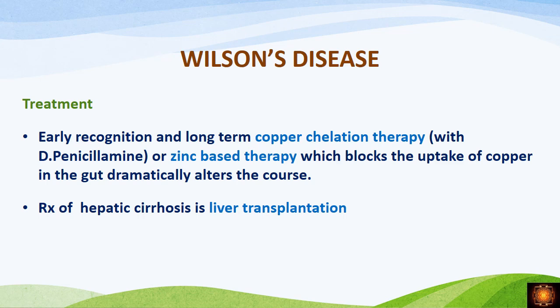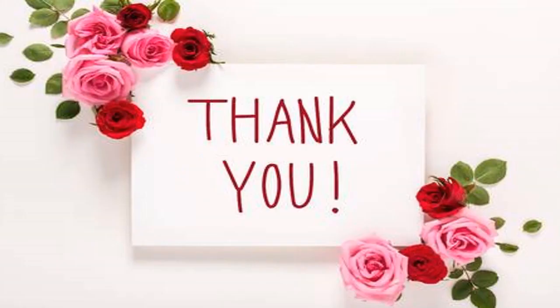Treatment is chelation therapy — similar to iron chelation in hemochromatosis, here we give copper chelation therapy, typically with penicillamine. Zinc-based therapy is also used, which blocks absorption of copper in the gut. If hepatic cirrhosis is severe, the patient needs liver transplantation.